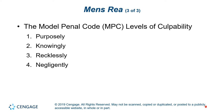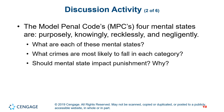Then there's negligently. A person acts negligently with respect to a material element of an offense when he should be aware of a substantial and unjustifiable risk that the material element exists or will result from his conduct. This risk must be of such a nature and degree that the actor's failure to perceive it, considering the nature and purpose of his conduct and the circumstances known to him, involved a gross deviation from the standard of care that a reasonable person would observe in the actor's situation.